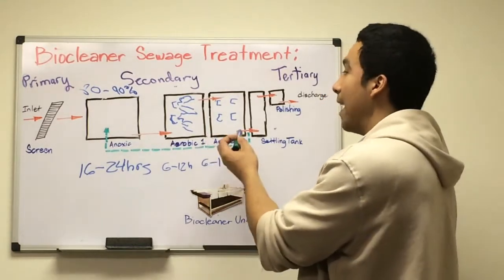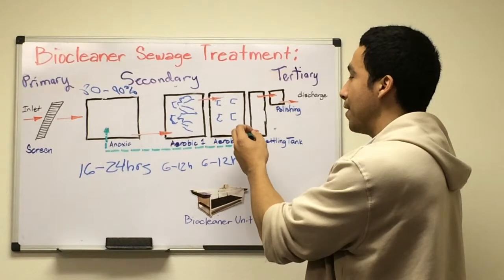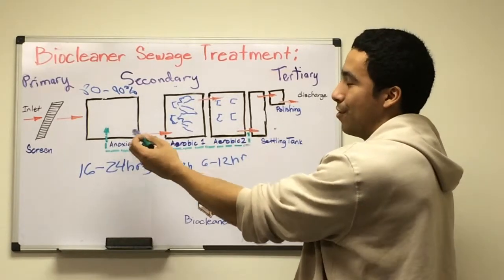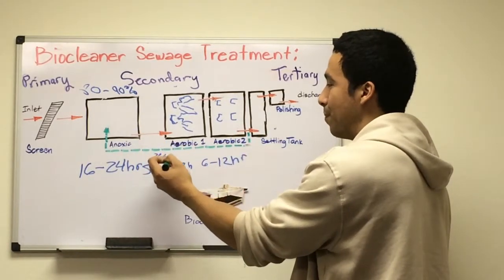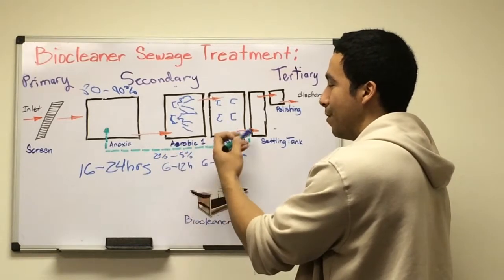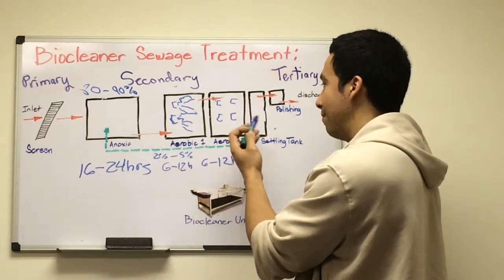After aerobic treatment, this is where we do our return. We usually do anywhere from two to five percent return, so we dose our microbes which are facultative back to the anoxic where they convert to anaerobic.